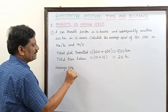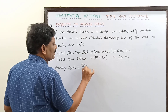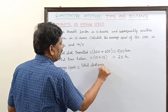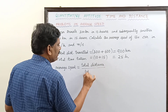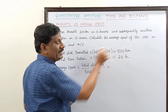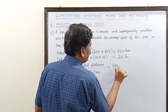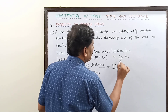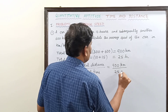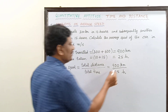Now, average speed — what is the formula we have studied? Average speed is equal to the total distance traveled divided by the total time taken. So that is equal to 900 km divided by 25 hours. Both are divisible by 5.